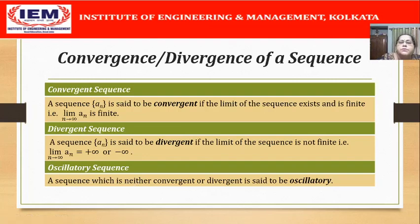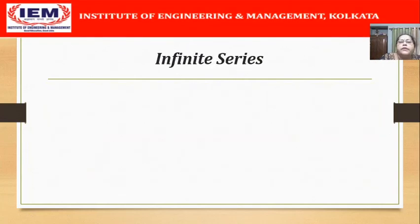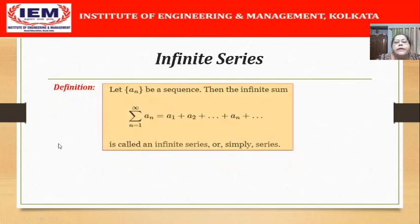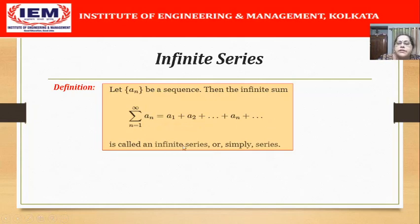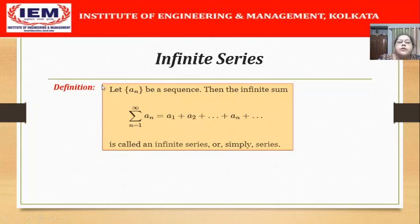With this pre-knowledge, we will now proceed to define infinite series. Let {a_n} be a sequence; then the infinite sum — summation of a_n from n=1 to infinity — that is a_1 + a_2 + dots + a_n + dots — is called an infinite series, or simply a series. Thus, a series is nothing but the sum of the terms of a sequence.